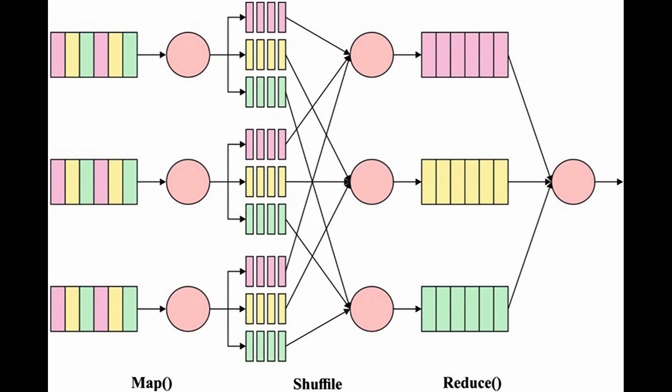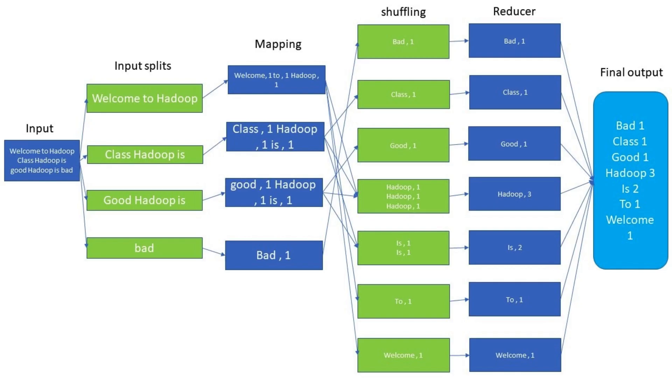The MapReduce programming model abstracts away many of the complexities of distributed data processing, such as data partitioning, distribution, fault tolerance, and parallel execution. It allows developers to focus on writing the Map and Reduce functions tailored to their specific data processing needs.